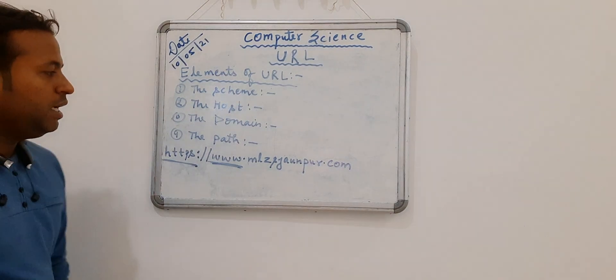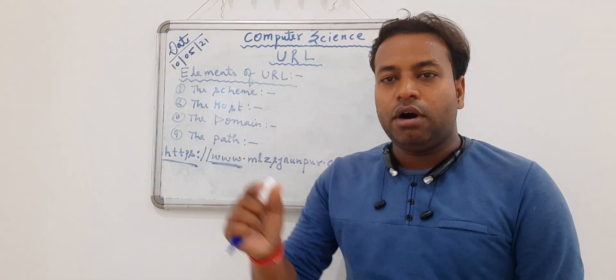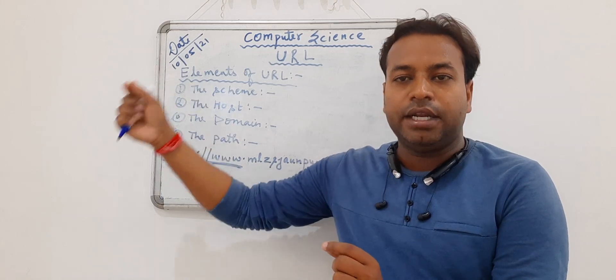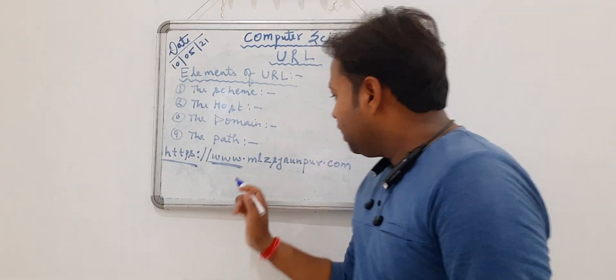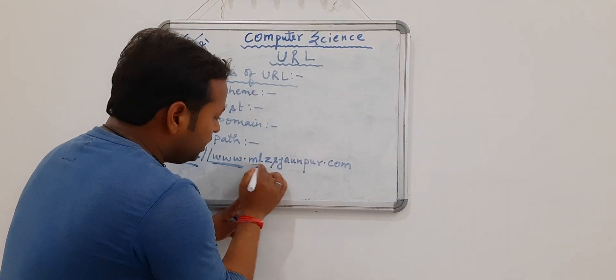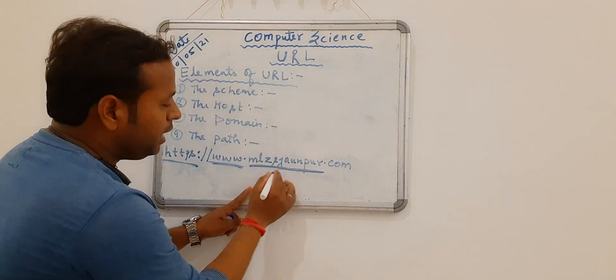Then after, next part comes that is the domain. Domain name is the name of the URL which is given by the organization or which is given by the company. So here the domain name is what? And then Jesus John book. This is called domain name.